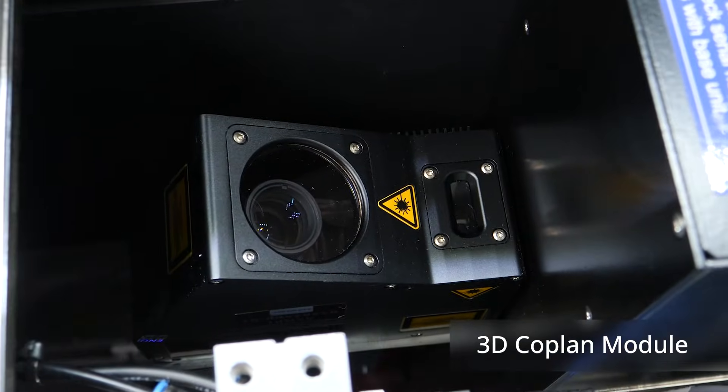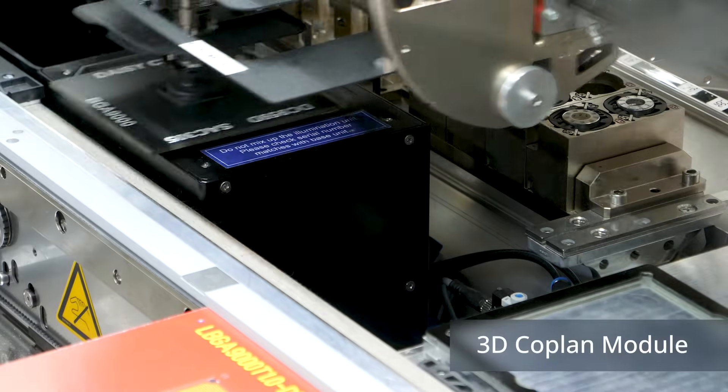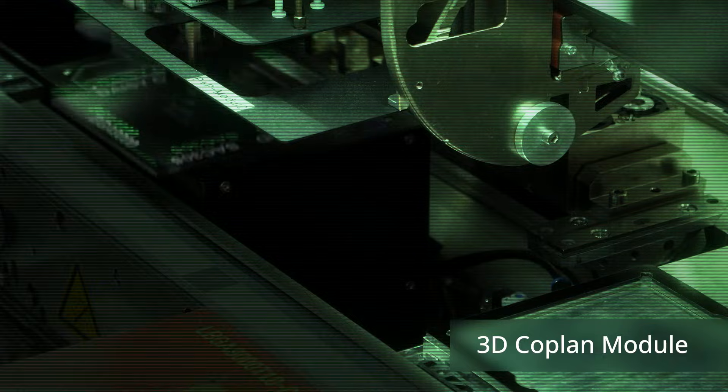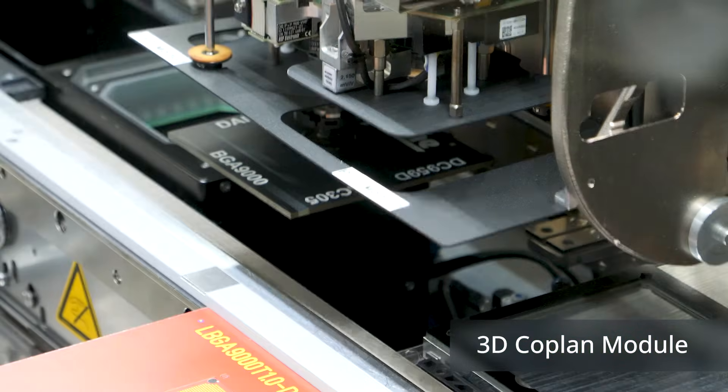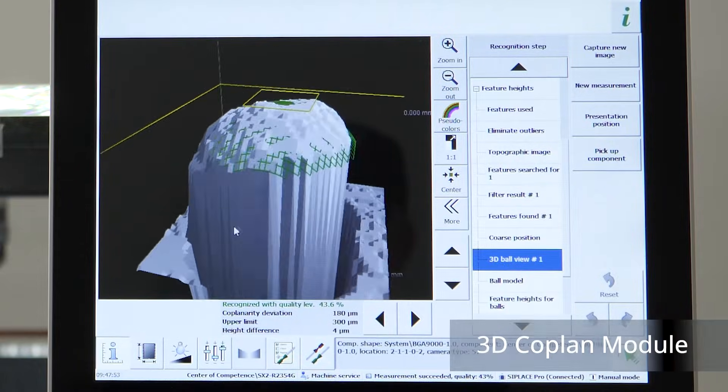The completely new 3D Coplan module introduces a new option for the C Place SX series. In addition to verifying missing balls or deformed pins, the 3D Coplan module also measures the coplanarity of large BGAs using extremely precise laser triangulation technology.